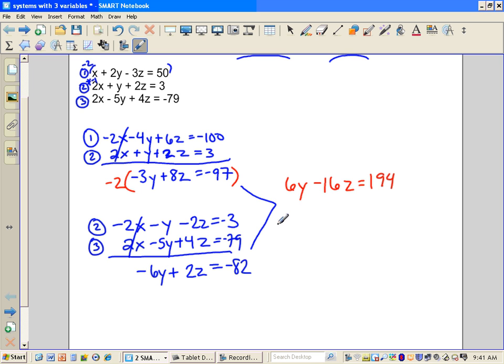We still have negative 6y from down below here, plus 2z is equal to negative 82. Cancel the y's. Negative 16z plus 2z is negative 14z, 94 minus 82 is 212. Believe it or not, when you divide by negative 14 here, you get z is equal to negative 8. Thank goodness that goes in nice and evenly.